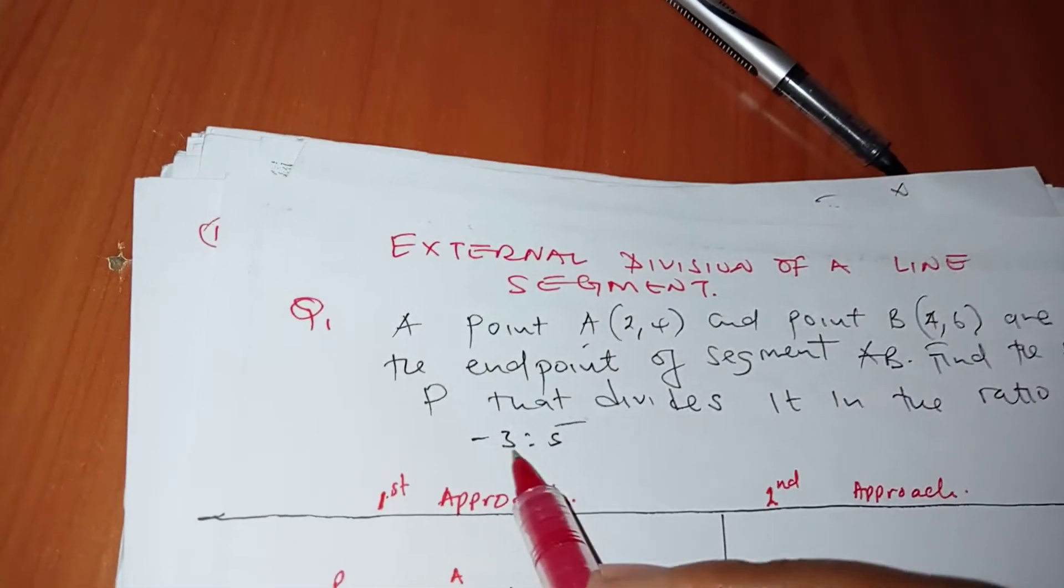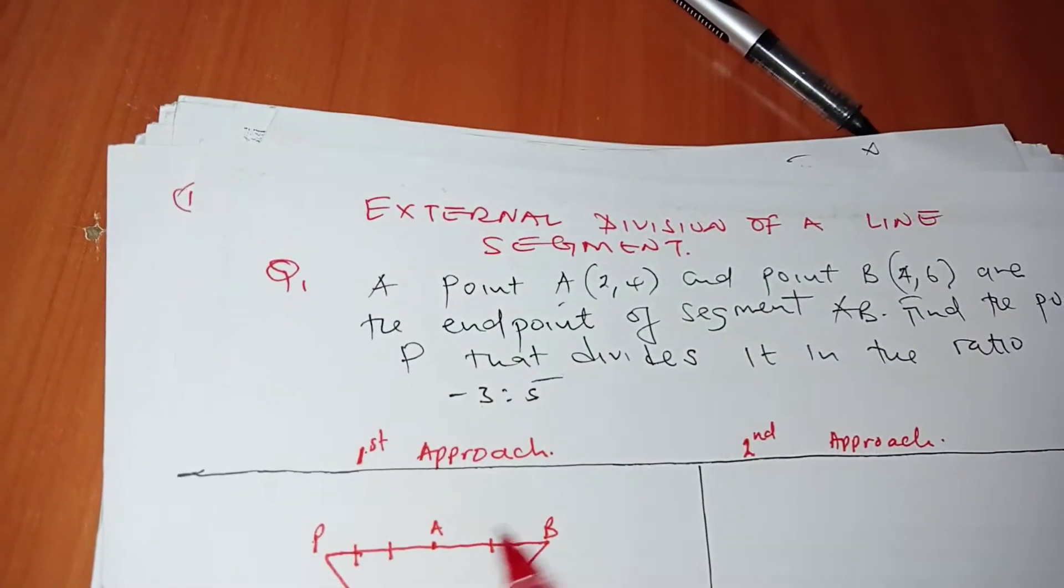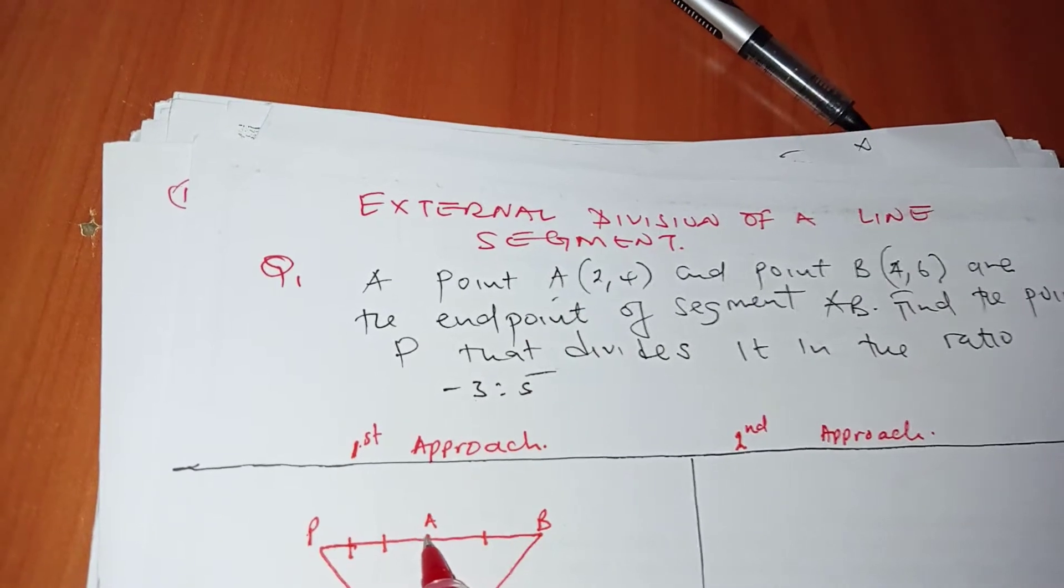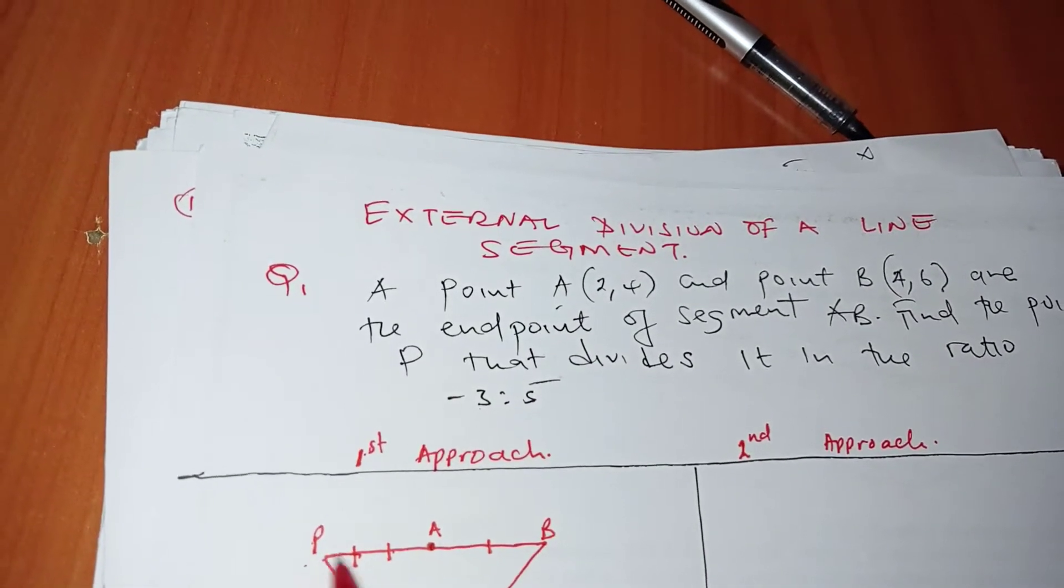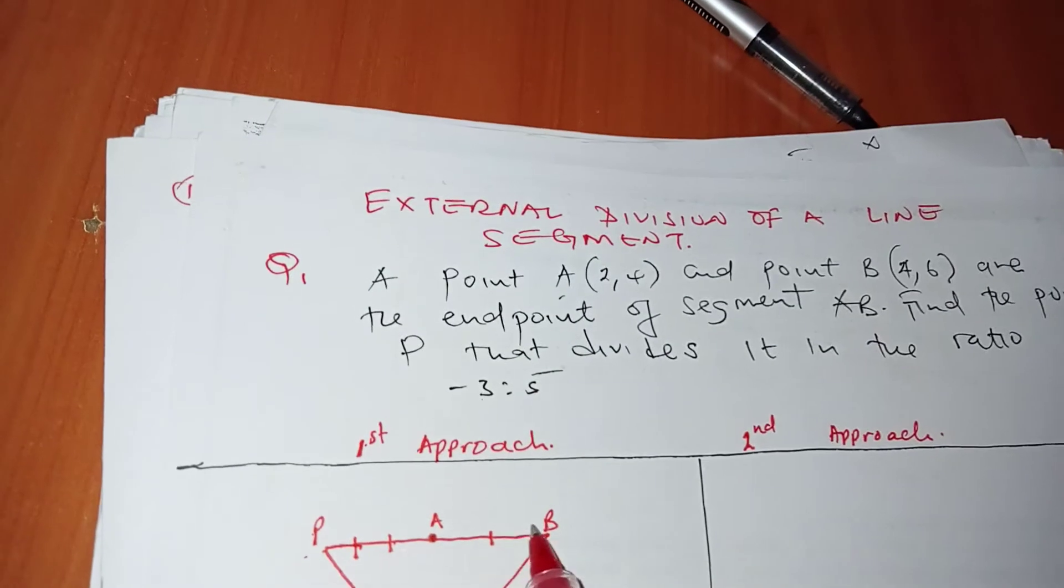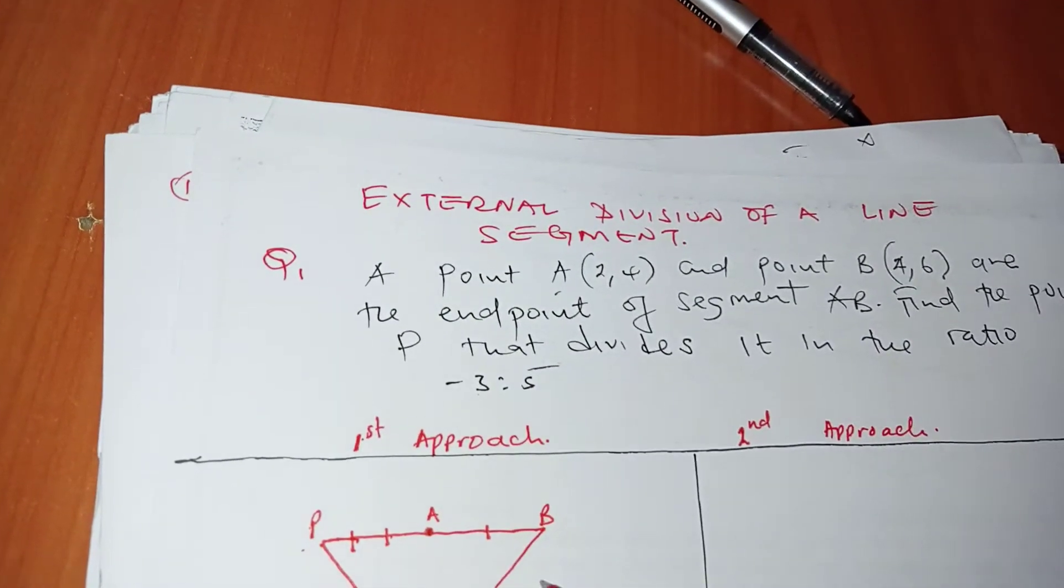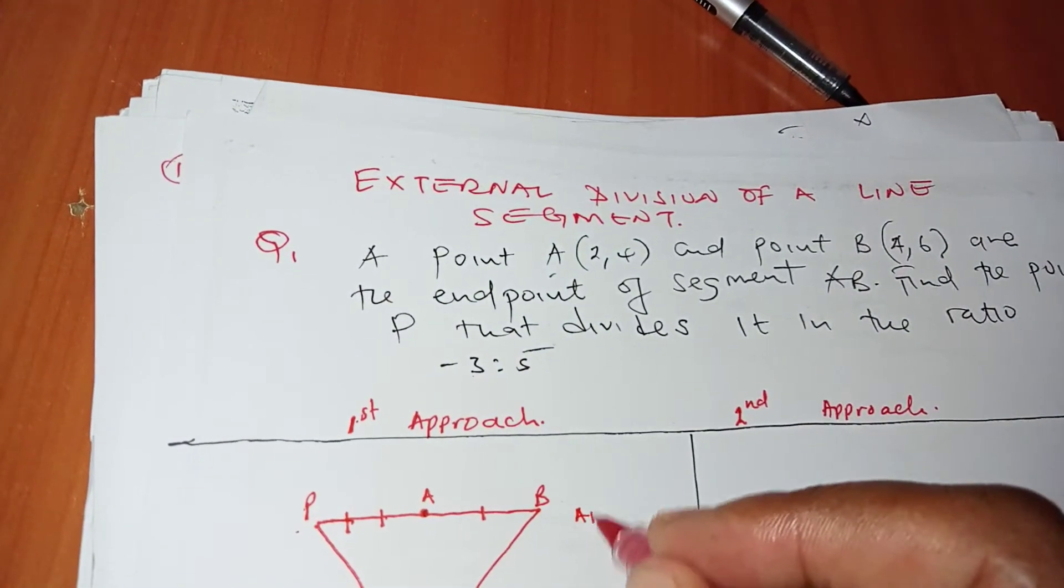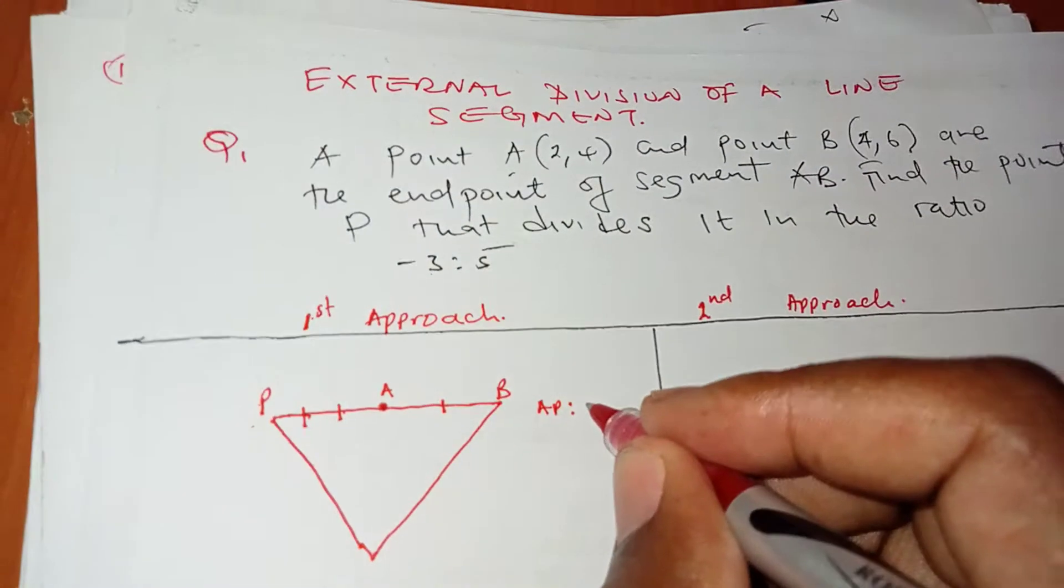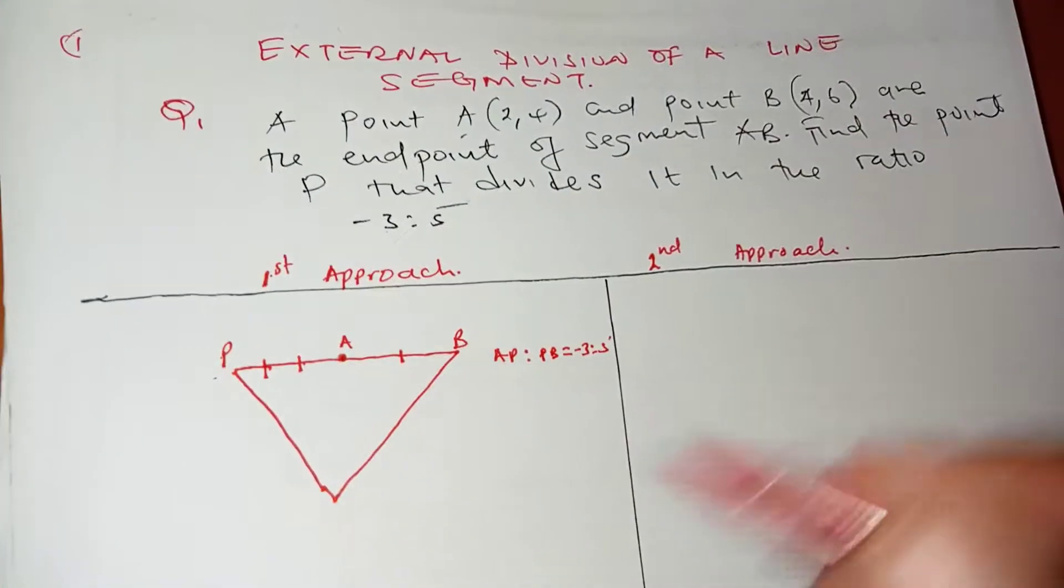We have the ratio -3:5. So it means I'm moving 3 units from A, that's 1, 2, 3 to go to P, then move 5 units from P to B. In other words, AP:PB equals -3:5.